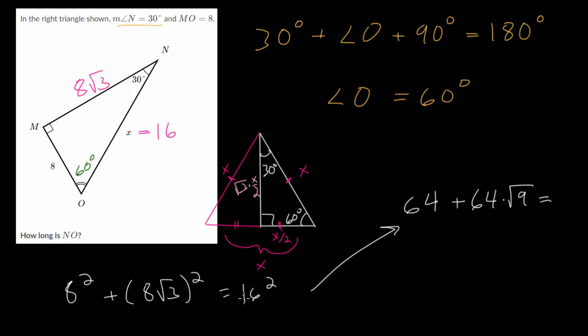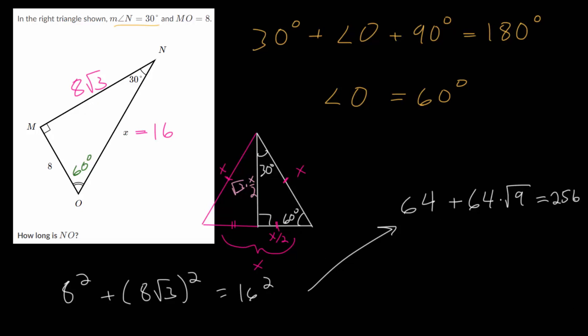And this is equal to 16 squared, which is 256. And again, we're just simplifying. Hopefully, if we did this correctly, these would add up to 256. And square root of 9, that's just 3. So we get 3 times 64.